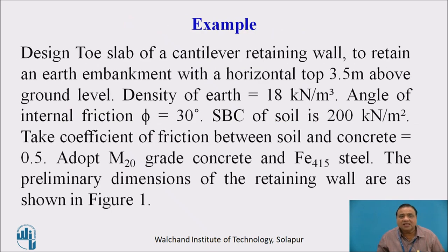Example: design toe slab of a cantilever retaining wall to retain an earth embankment with a horizontal top 3.5 meter above the ground level, density of earth 18 kN per cubic meter, angle of internal friction 30 degree, SBC of soil 200 kN per meter square, coefficient of friction between soil and concrete 0.5, adopt M20 grade concrete and Fe415 steel. The preliminary dimensions of the retaining wall are as shown in figure 1.